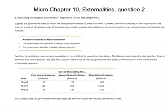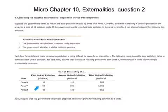Firm X is a fairly low-cost polluter. The cost of eliminating the first unit of pollution for Firm X is $95, the second is $120, and the third is $200. Firm Y, on the other hand, has very high pollution reduction costs: $450 to eliminate the first unit, $800 to eliminate the second, and $1,050 to eliminate the third.